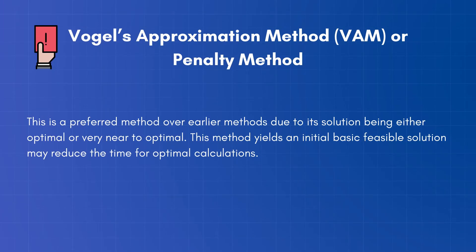Vogel's approximation method or penalty method is a preferred method over earlier methods due to its solution being either optimal or very near to optimal. This method yields an initial basic feasible solution which may reduce the time for optimal calculations.